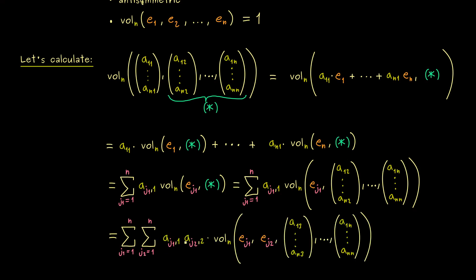And then, of course, a good name for the index would be j_2. Moreover, we get a_{j2,2} as the vector in front, and in the volume form we find e_{j2} in the second entry. And of course, in the same way as before, we don't change the other entries in the volume form.